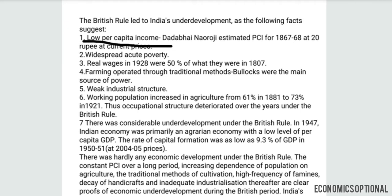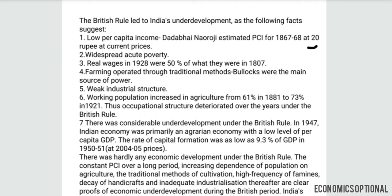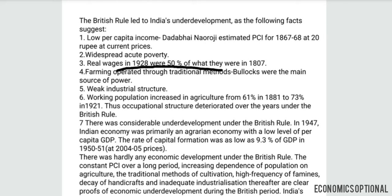Low per capita income: Dadabhai Naoroji estimated per capita income in 1867–68 at 20 rupees at current prices — it was very low. Second, widespread acute poverty: there was acute poverty throughout India, especially in the Bengal Presidency. Real wages in 1928 were 50% of what they were in 1807.